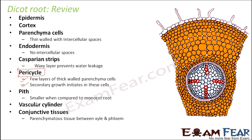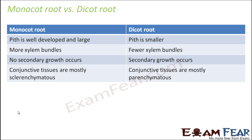Conjunctive tissues are parenchymatic tissues present between xylem and phloem — where xylem and phloem alternate, there are parenchymatous tissues in between, known as conjunctive tissues. These conjunctive tissues were not present in the monocot root. Please have a good understanding of these diagrams, because if asked to explain the structure of monocot and dicot root, it is mandatory to draw the diagram for each.